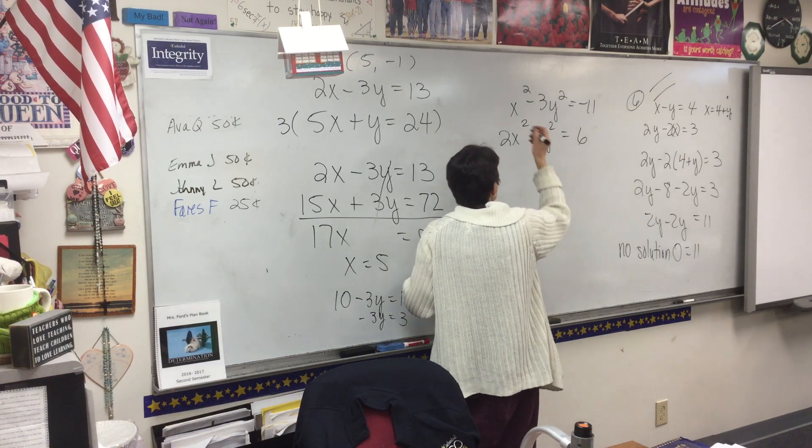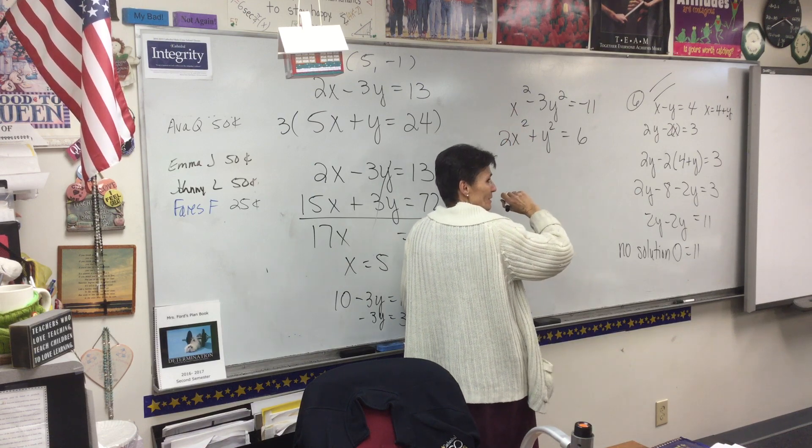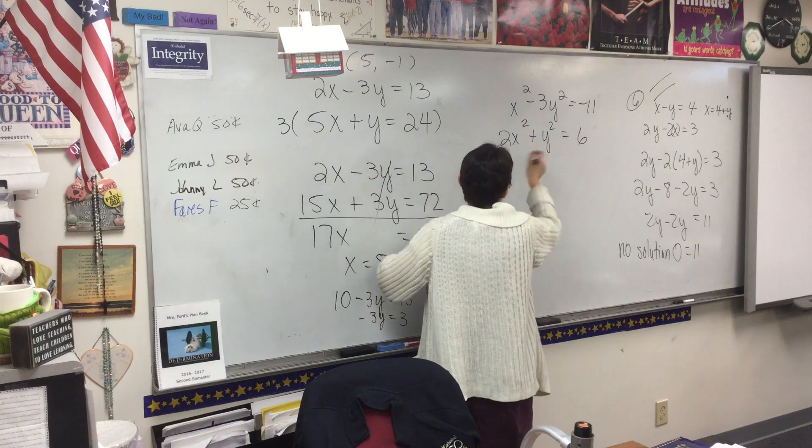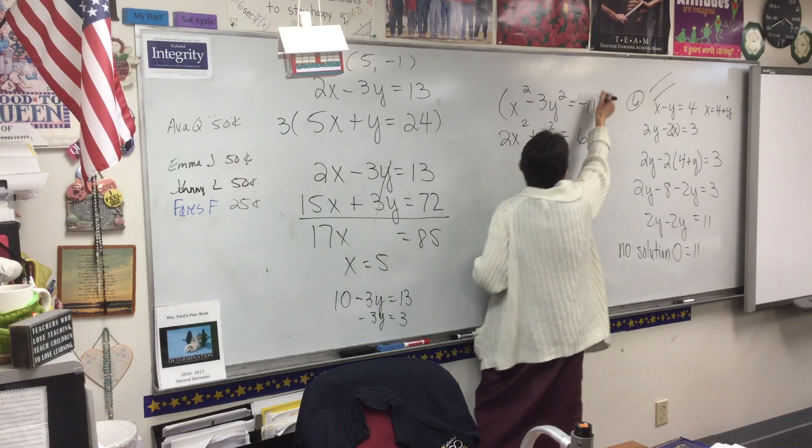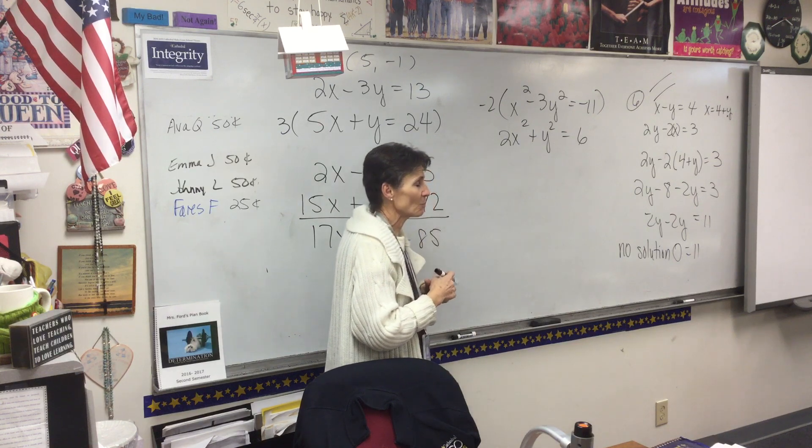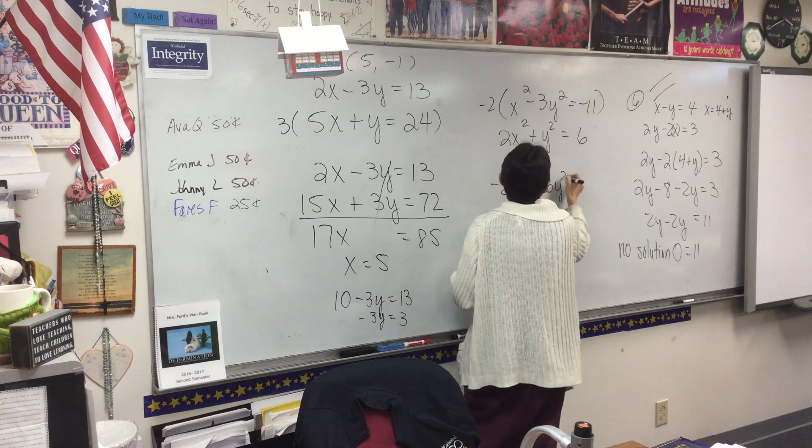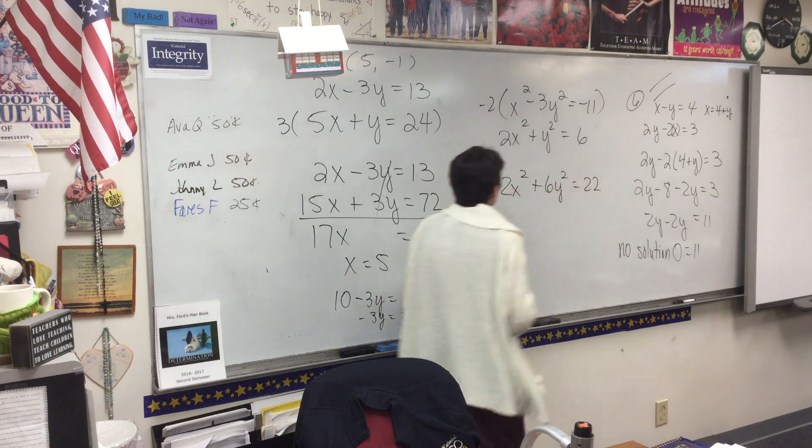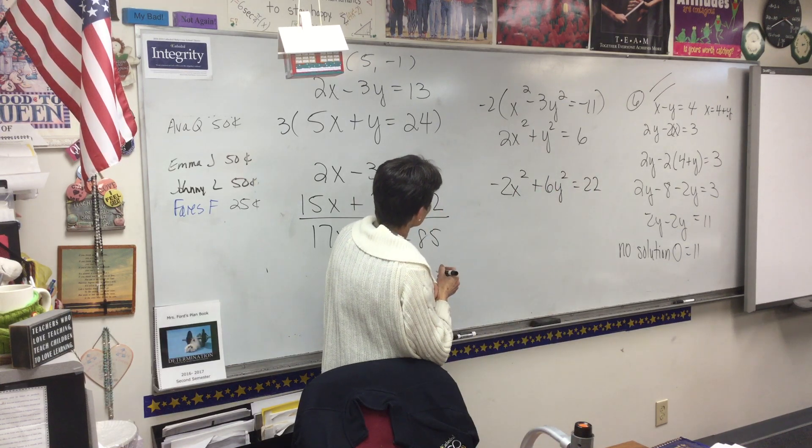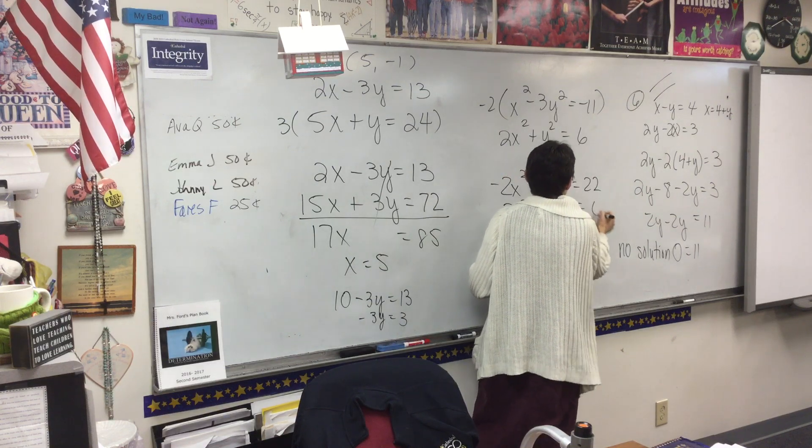Okay, I'm hearing some people say let's multiply the top by negative 2, and some people are saying let's multiply the bottom by 3. It doesn't matter. Since I already multiplied the bottom by 3, I'll multiply the top by negative 2 in this one. So negative 2x squared plus 6y squared equals 22. Did I do a good job with that? So 2x squared plus y squared equals 6.